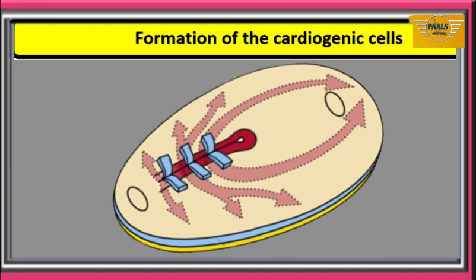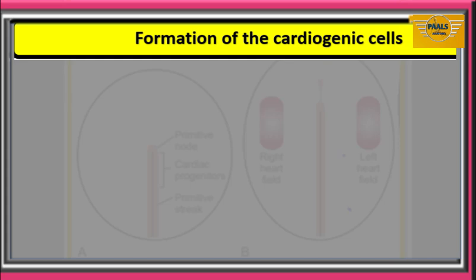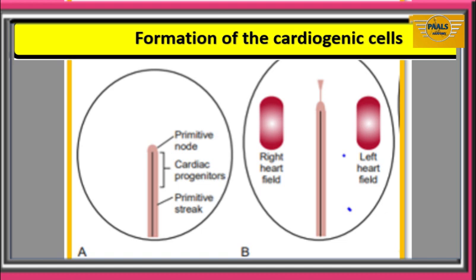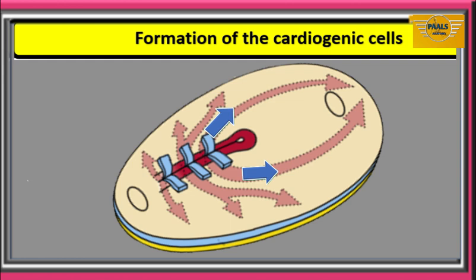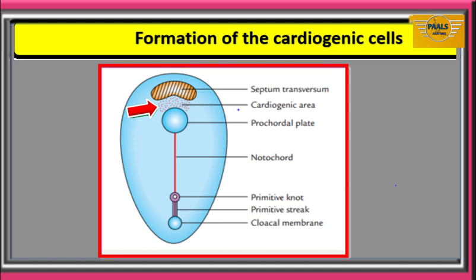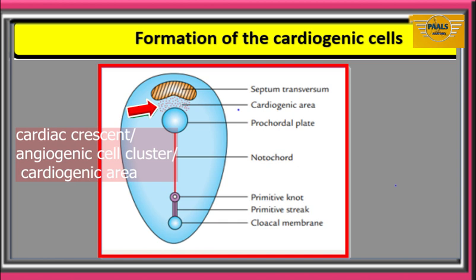Zooming in, we isolate the two layers of the bilaminar germ disc: the epiblast and the hypoblast. Progenitor heart cells in the region immediately adjacent to the cranial end of the primitive streak will migrate through the primitive streak bilaterally and then cranially, becoming localized within the cranial lateral plate mesoderm on both sides of the embryo, forming an arch above the developing head region called the cardiac crescent, angiogenic cell cluster, or cardiogenic area.